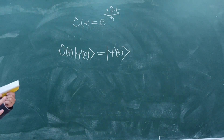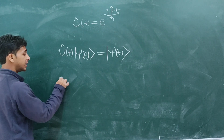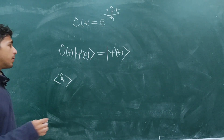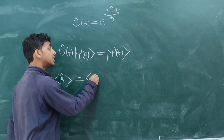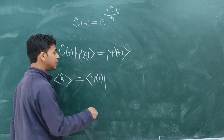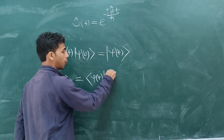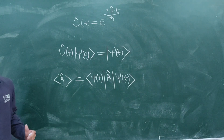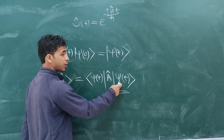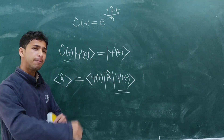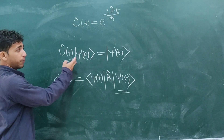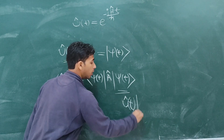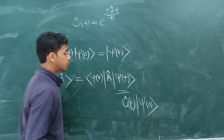If you are asked to get the expectation value of a time independent operator — let's say A-cap is a time independent operator — the procedure is to sandwich A-cap between bra psi(t) and ket psi(t). Instead of psi(t), if you want to write the state in time independent form, you use the equation: psi(t) equals U-cap(t) operated on ket psi(0), where the state psi(0) is time independent.